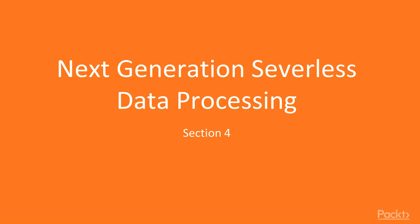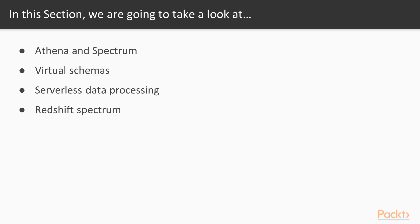Welcome back and welcome to Section 4, where we're going to take a look at some of the next generation serverless data processing tools offered by Amazon AWS. First of all, let's have a brief overview of what we're going to cover in this section. We're going to start by taking a look at Amazon Athena and Redshift Spectrum, which are two of the latest and greatest big data processing tools from Amazon, both of which are less than six months old and really hot off the press from the Amazon re:Invent conference late last year.